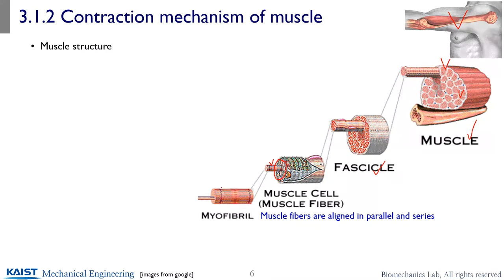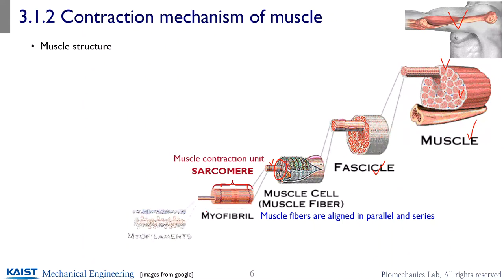The myofibril has a very important unit called the sarcomere. This is the muscle contraction unit, and those sarcomeres are composed by myofilaments — actin and myosin myofilaments. So those smallest contraction units, sarcomeres, are composed within a muscle cell, fascicle, and the muscle itself. That's a kind of hierarchical structure.